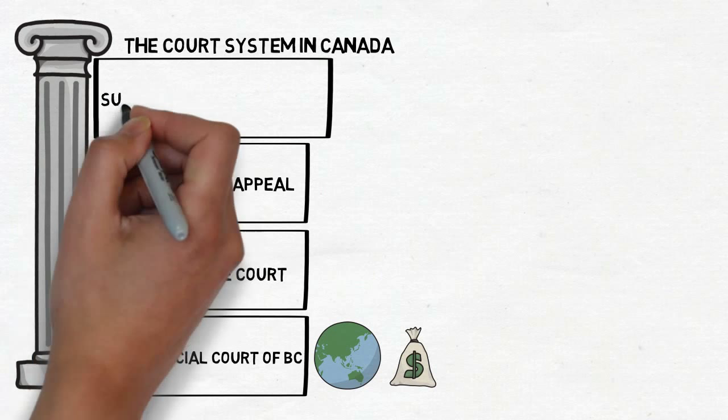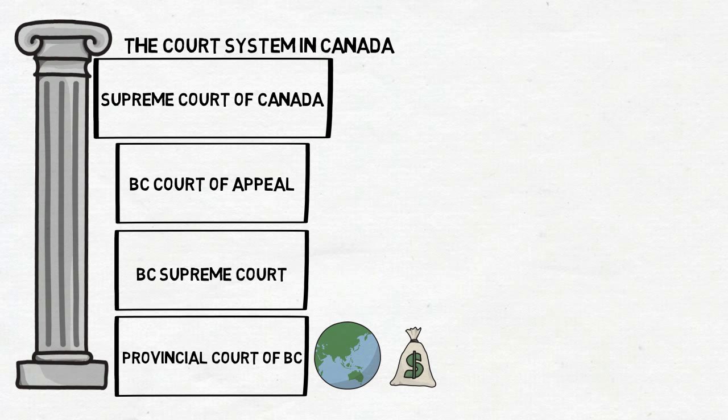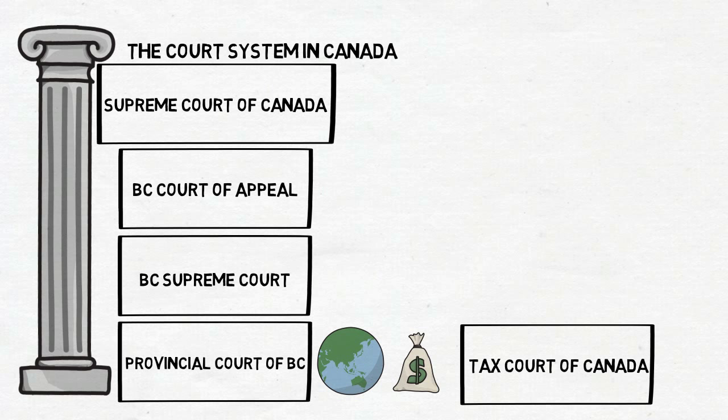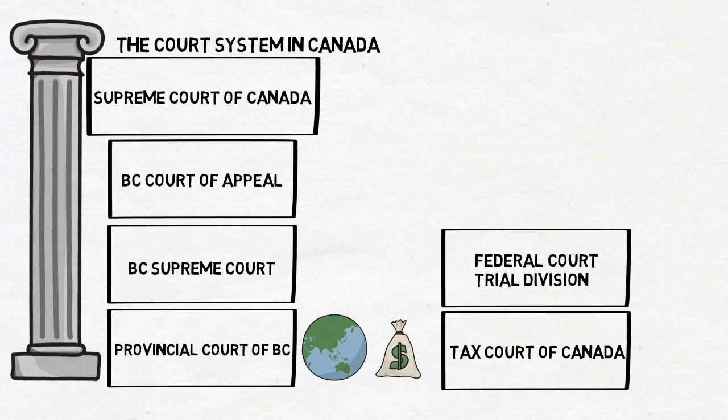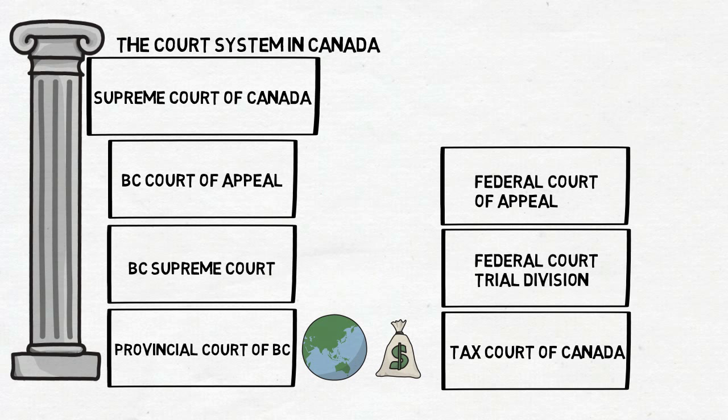And lastly among provincial courts, we have the Supreme Court of Canada — a court with nine judges that reviews decisions of previous courts if the matter has national importance. Next, we have the Tax Court of Canada, followed by the Federal Court Trial Division, which deals with patents, copyrights, ocean, or military issues. Following that is the Federal Court of Appeals, an appellate court reviewing decisions from the Federal Trial Division.